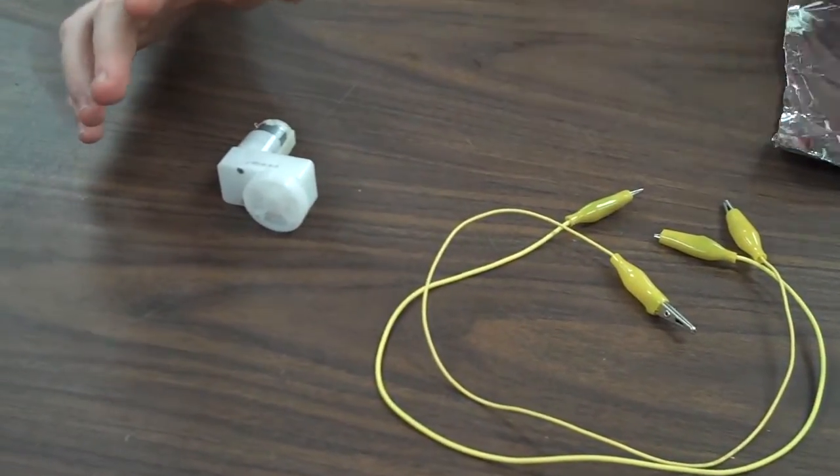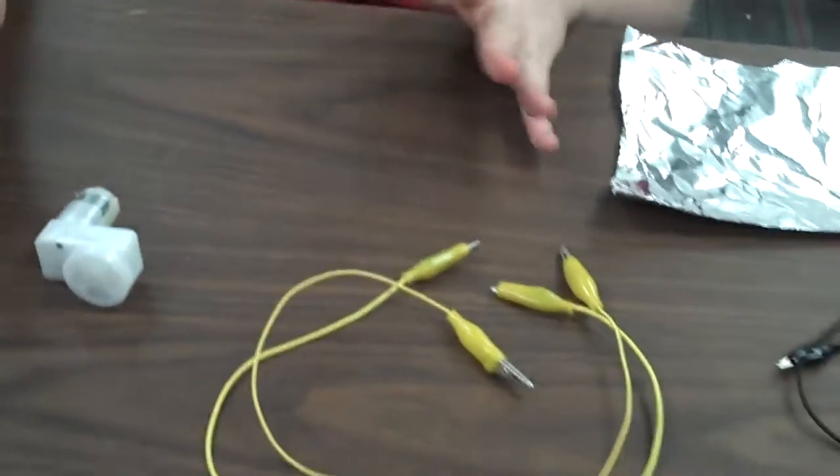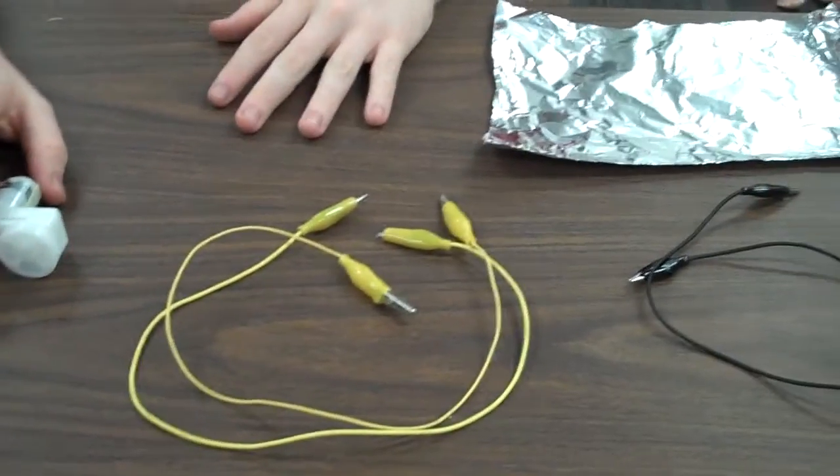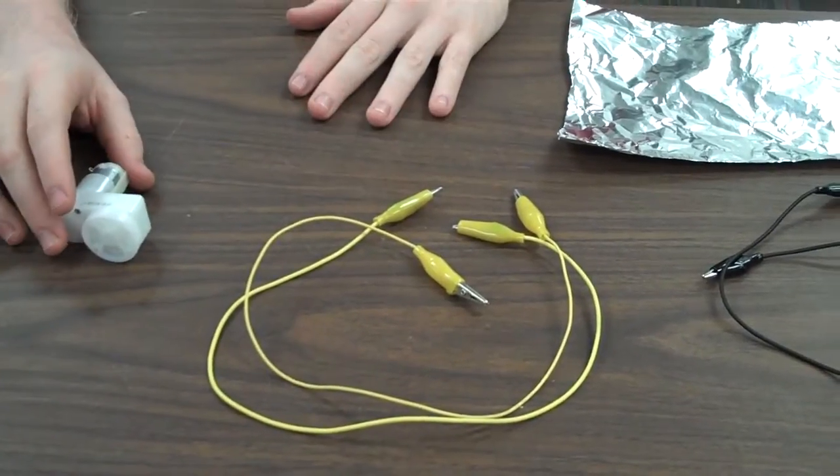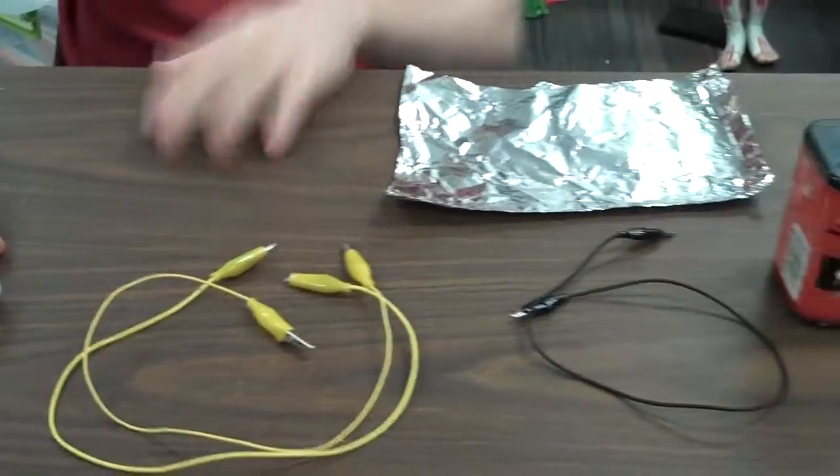You could use this setup with the poor man switch to power anything you'd like, an electromagnet, a motor, or a light bulb. It all depends on what you want to power and how much power you need, depends on which battery you pick.